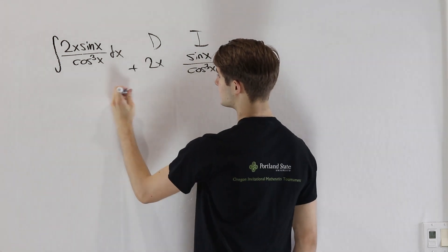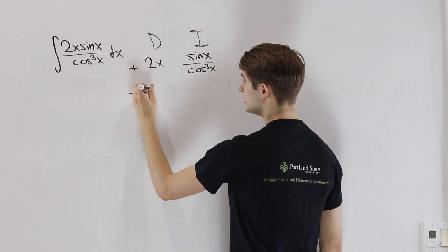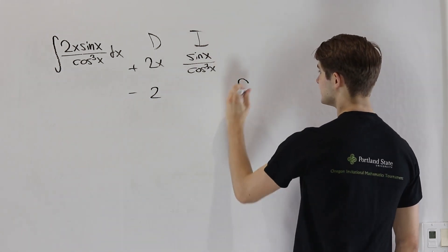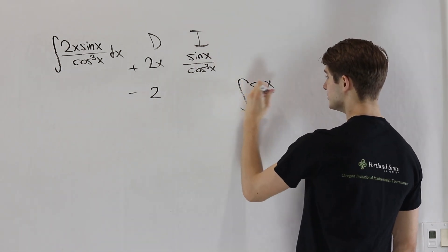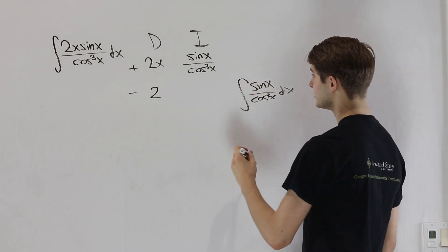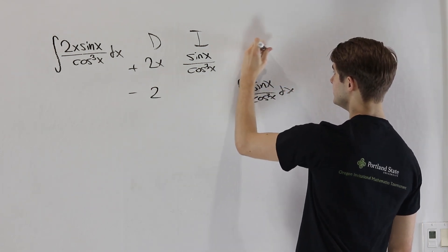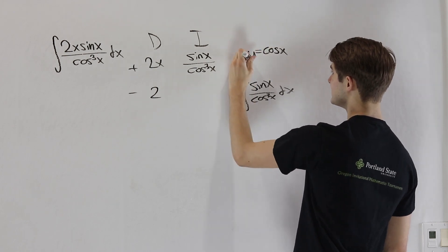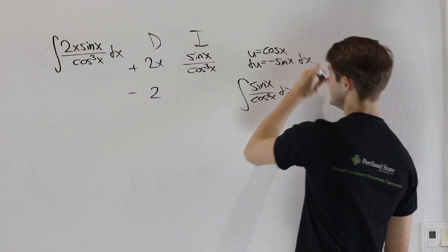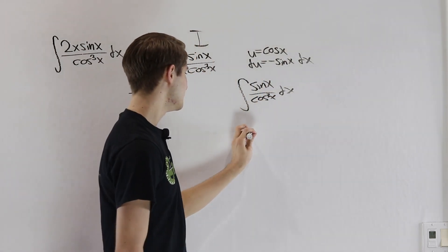In this case, if we have our plus minus along the side, differentiating 2x will just give us a 2 and then we have to integrate on the side sine of x over cosine cubed of x dx. Like we said before, in this case we can just substitute u equals cosine x and then du is going to be negative sine of x dx.